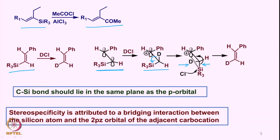This carbocation intermediate undergoes rotation so the carbon-silicon bond goes down — that is the least motion, which is energetically favorable. When that happens, deuterium comes into this position, and then the nucleophile attacks. We have a beta carbocation, the carbon-silicon bond breaks with the help of the nucleophile, and we get the product in which deuterium now occupies the same position as the silicon. The carbon-silicon bond must lie in the plane of the p orbital — that is why we rotate it. Stereospecificity is attributed to a bridging interaction between the silicon atom and the two Pz orbitals of the adjacent carbocation. This is how the vinylsilanes react and we get the product in which the silicon group gets replaced by the electrophile.